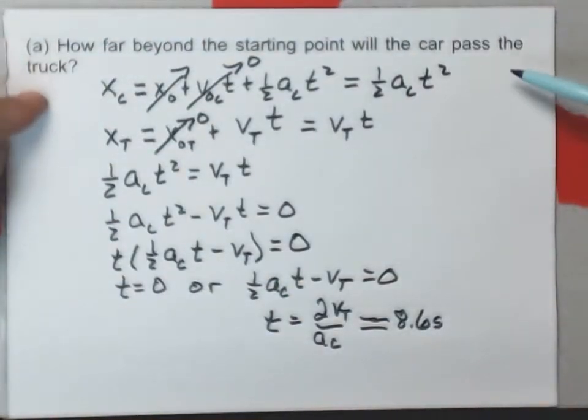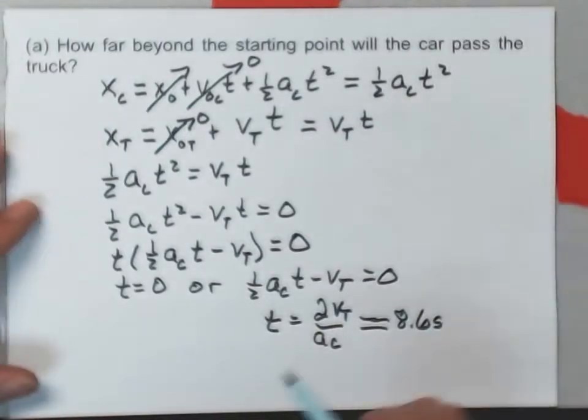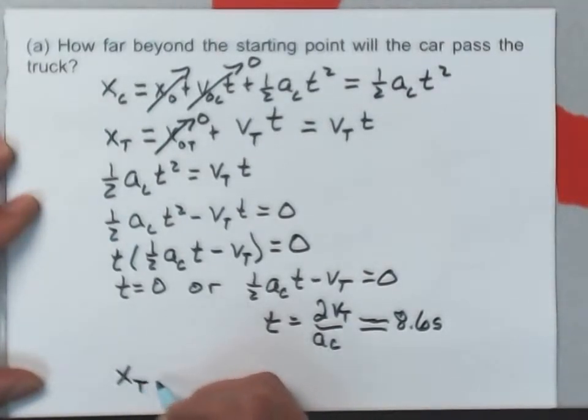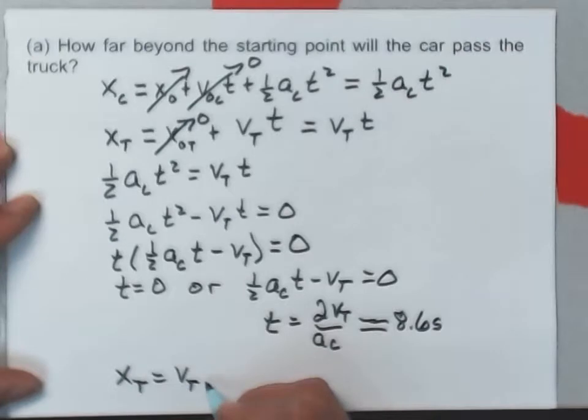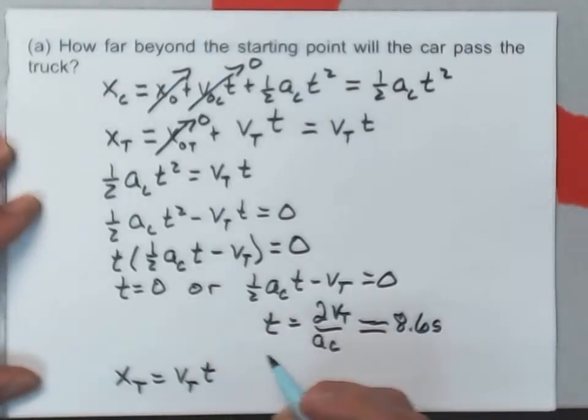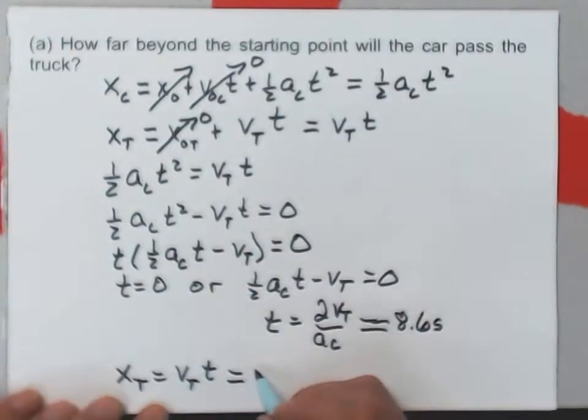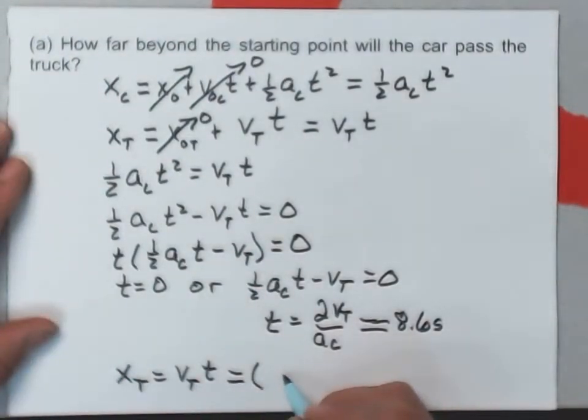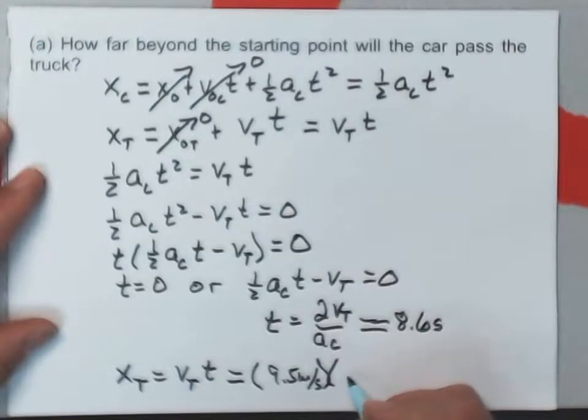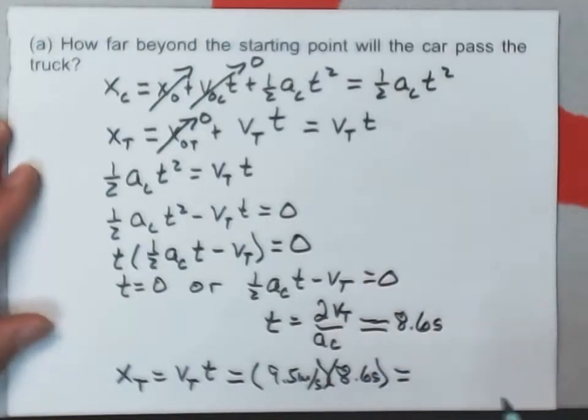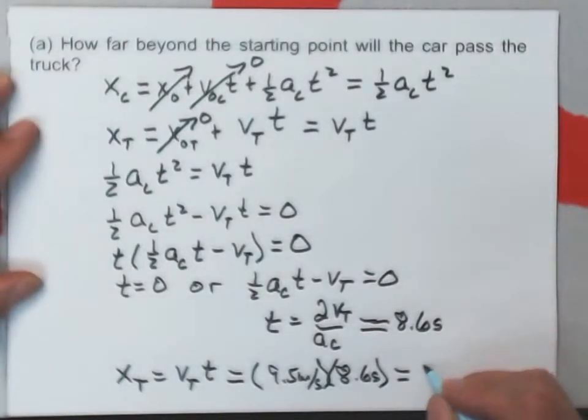Now, I want to know how far beyond the starting point will the car pass the truck? Well, the easy equation here is that the position of the truck is equal to the velocity of the truck times T. I could also have used the equation of motion for the car. Actually, it isn't any harder. But I'd have the 9.5 meters per second that the truck is going at times the 8.6 seconds that it takes for the car to catch the truck. And I get a distance of about 82 meters.